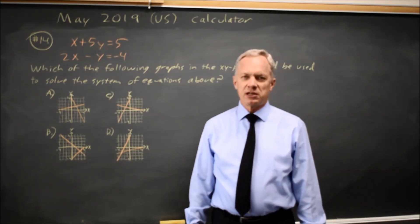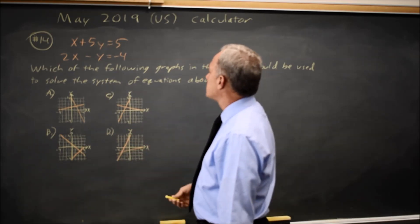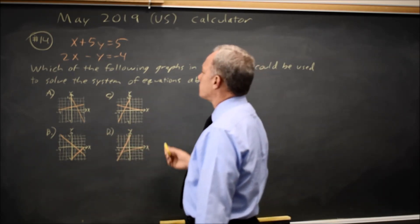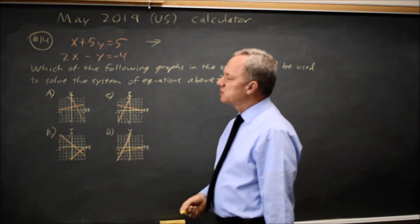This is calculator question number 14. Collingford gives us a system of equations and asks which set of graphs could be used to solve this system. You can solve a system by graphing the equations and the point of intersection is the solution.